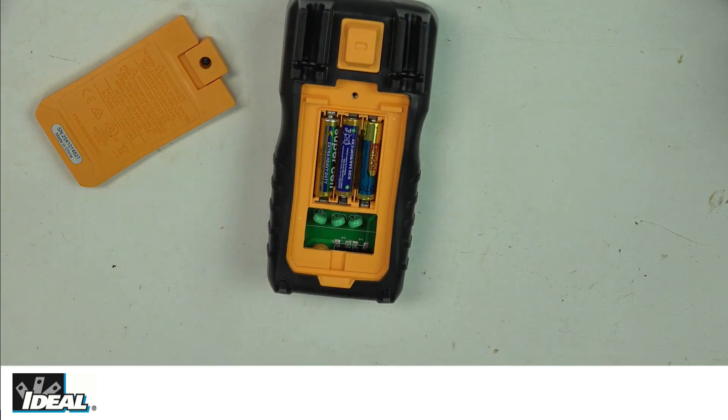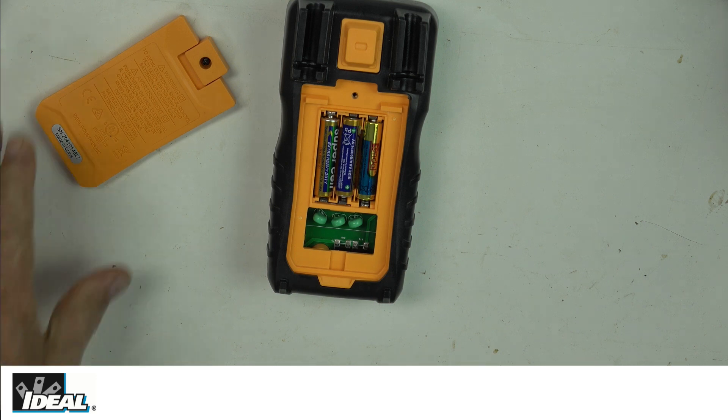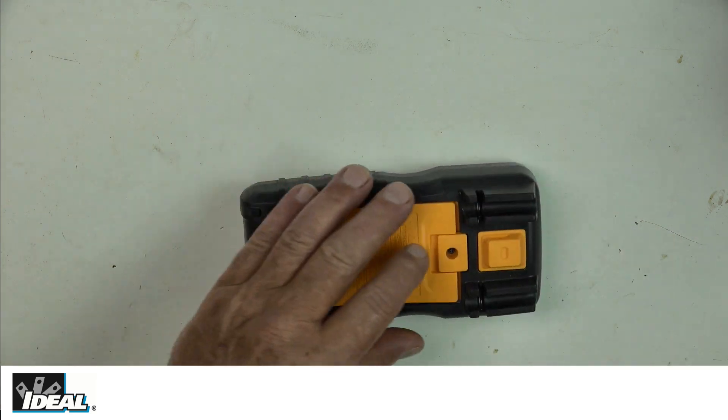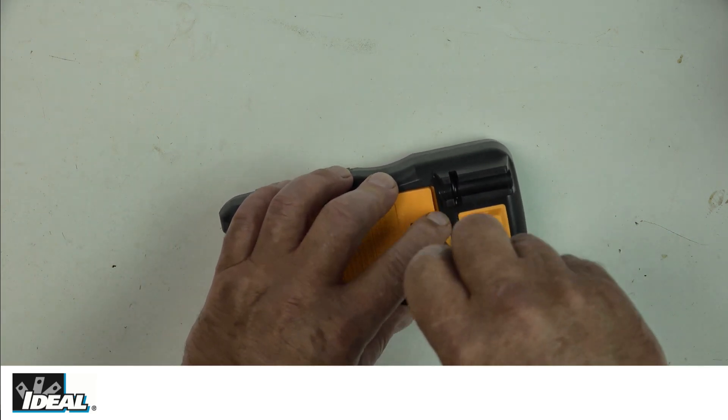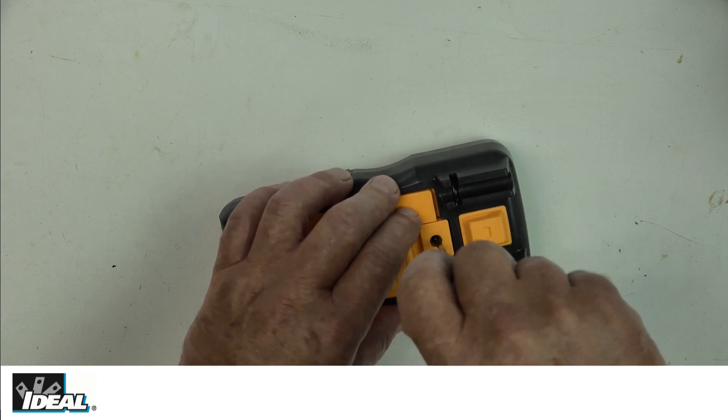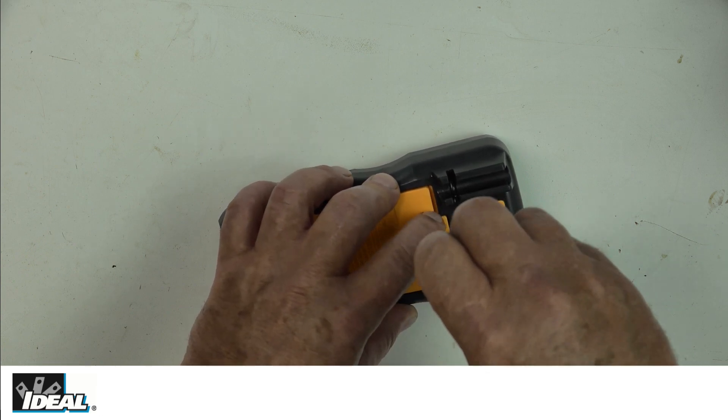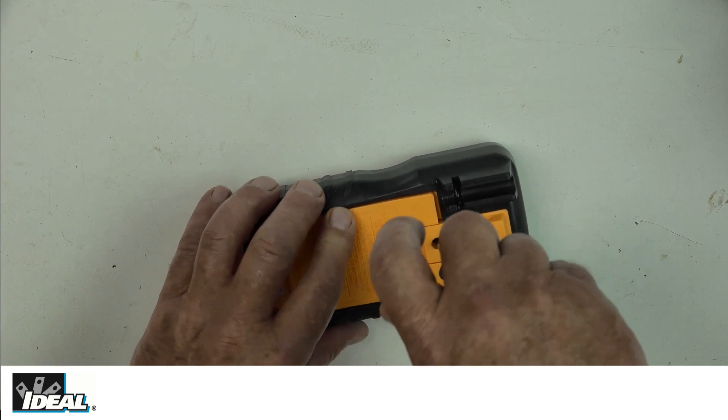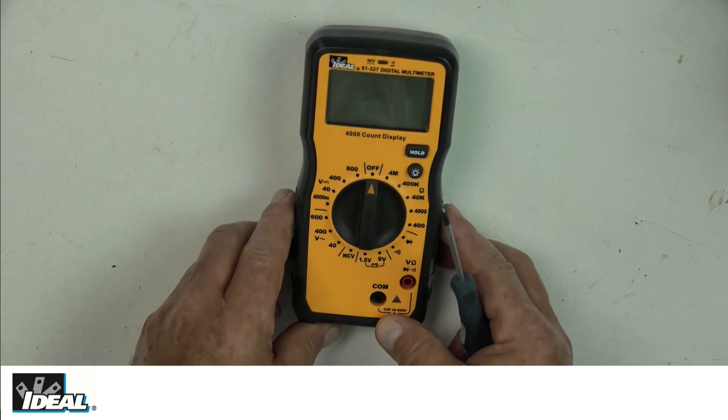On the tester, you normally see things like fuses. This particular tester does not measure amperage or current, so there are no fuses to be replaced inside the tester. Let me put the battery cover back on.